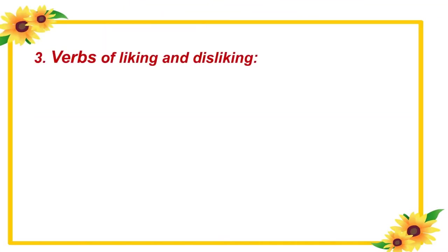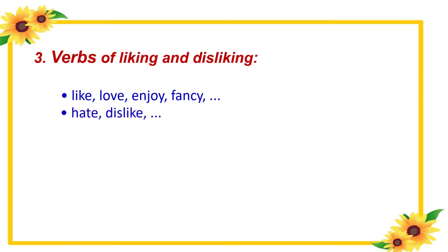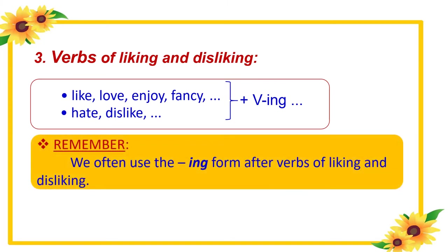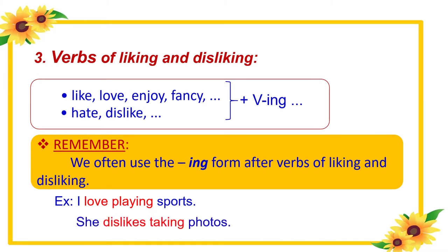The third grammar point is words of liking and disliking. Here are some words of liking: like, love, enjoy, fancy. Words of disliking include: hate, dislike. After these words, we use the verb in the -ing form. Remember, we often use the gerund after words of liking and disliking. For example: I love playing sports; she dislikes checking photos.